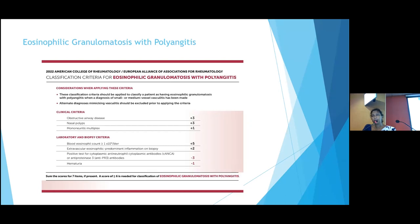For EGPA, the 2022 ACR/EULAR classification criteria include clinical criteria such as obstructive airway disease, nasal polyps, and mononeuritis multiplex, each assigned scores. Laboratory and biopsy criteria include eosinophil count greater than 1 × 10⁹ per litre, extravascular eosinophil-predominant inflammation on biopsy, positive C-ANCA antibodies, and hematuria — each assigned marks. If the sum of scores is six or more, a classification of EGPA can be supported.